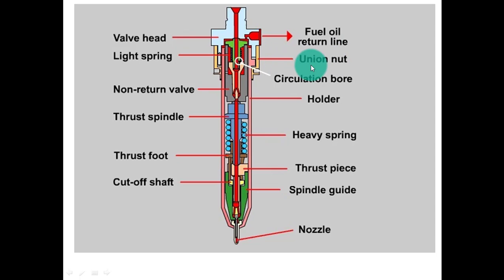You can see here the most important part, the circulation bore. This is the non-return valve. This is the holder. This is the thrust piece. This is the heavy spring. This is the thrust foot. This part is the thrust piece.